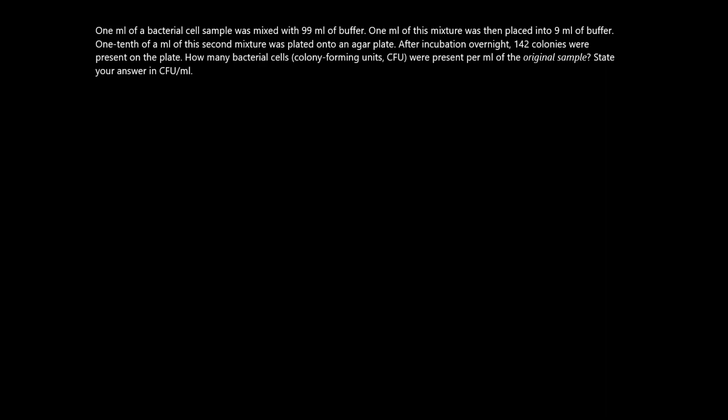Now the first dilution, we're taking one milliliter of our original bacterial cell culture and putting it in 99 mils. And this is a 1 to 100 dilution, where out of 100 milliliters of the total solution, there is one milliliter of the original solution.